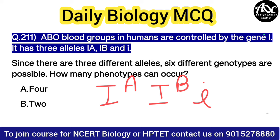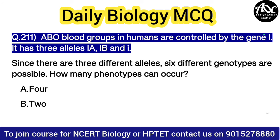This is called the gene. How many phenotypes are possible? Phenotypically, 4 blood groups can be made. So option A will be correct.